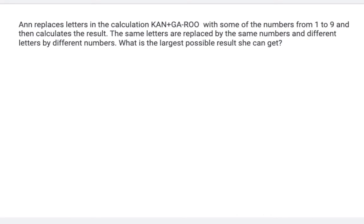Anne replaces letters in the calculation KAN+GA-ROO with some of the numbers from 1 to 9 and then calculates the result. The same letters are replaced by the same numbers and different letters by different numbers. What is the largest possible result she can get?